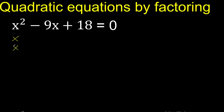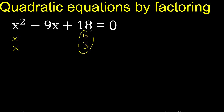x multiplied by x is x squared. We need 2 numbers that multiply to 18: 9 multiplied by 2 is 18, or 6 multiplied by 3 is 18. Let's try 6 and 3.